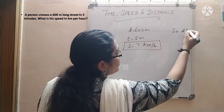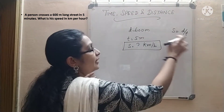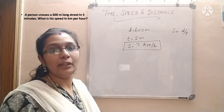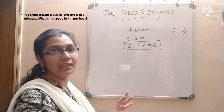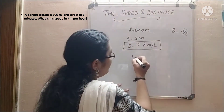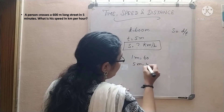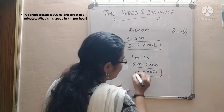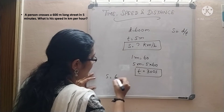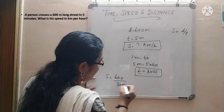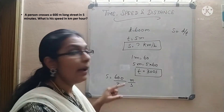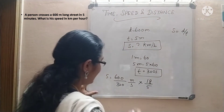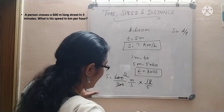We know speed is equal to distance by time. Here distance is in meters and time is in minutes. If it were in meters and seconds, you could directly convert meter per second to kilometer per hour. But here it is in minutes, so first convert to seconds. 1 minute equals 60 seconds, so 5 minutes equals 5 × 60 = 300 seconds. Now speed equals 600 divided by 300, which is in meter per second. To convert to kilometer per hour, multiply by 18/5.